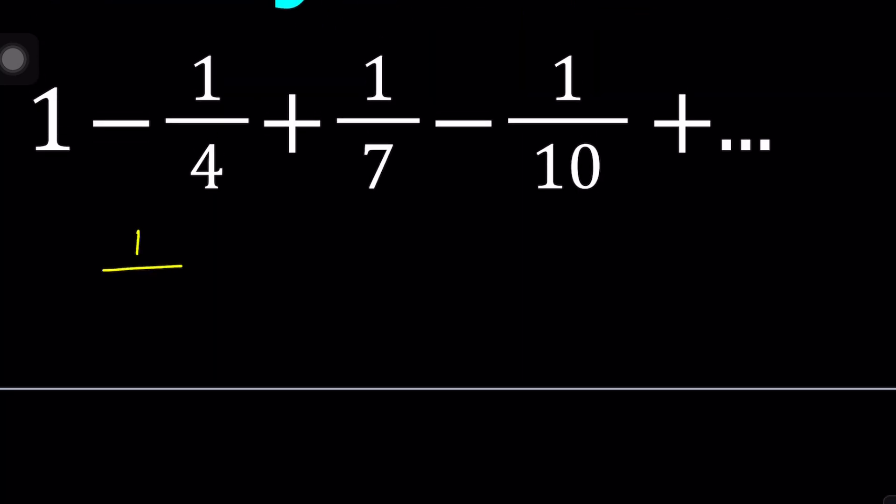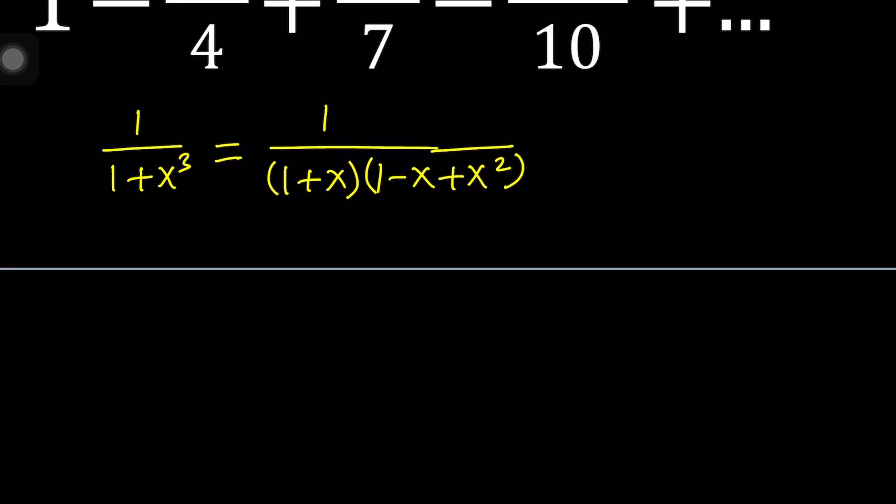So let's go ahead and take a look at the following expression: 1 over 1 plus x cubed. Now you might be questioning where does this come from. You'll see in a little bit. Now I want to do partial fractions on this. In other words, I want to write it as the sum of two fractions whose denominators are factors of 1 plus x cubed. So what are the factors of 1 plus x cubed? One of them is 1 plus x from sum of two cubes. The other one is going to be 1 minus x plus x squared, if you factor it using sum of two cubes.